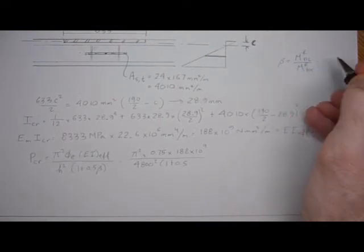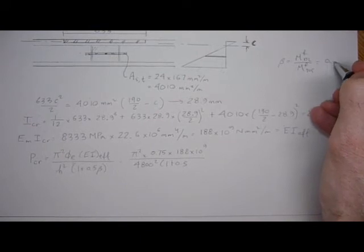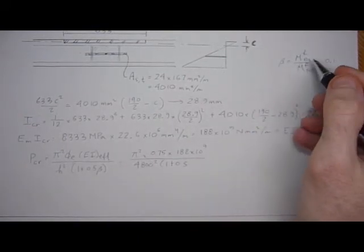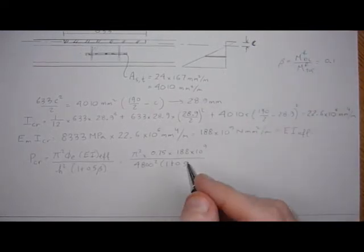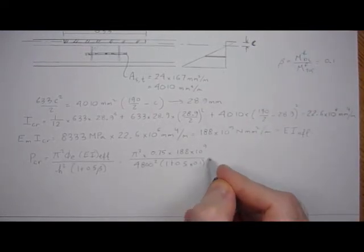Times one plus 0.5 beta, and beta is the moment factored dead load over the moment factored total load. Let's just say for this problem it came out to be 0.1.